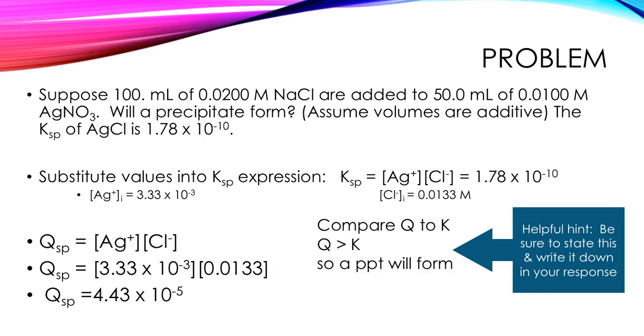You do need to make sure you explicitly compare Q versus K. You need to write Q is greater than K. Precipitate will form. Or Q is less than K. No precipitate. You need to explicitly state that. That's expected. These problems are really very manageable and very doable.